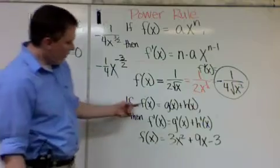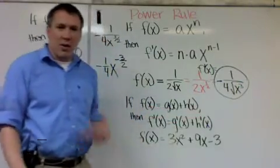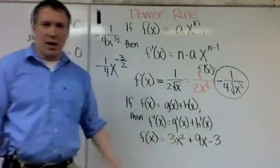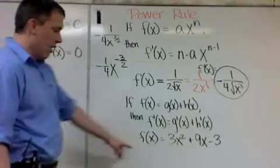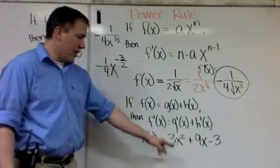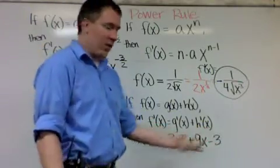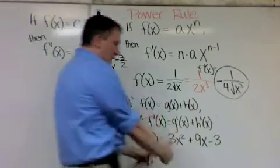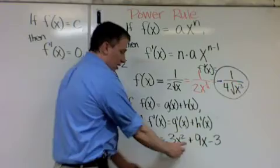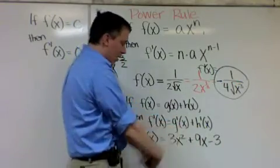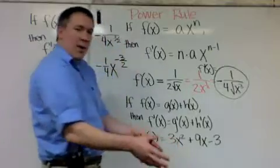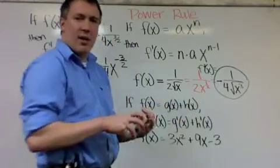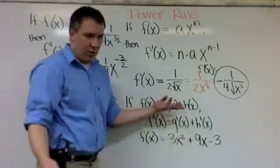And then the last one says, if I have a function that equals two functions added together, which sounds complicated, but it's really not, then the derivative of that function is just the derivative of those two functions added together. So we're going to use those to do this problem. Here's f of x. f of x equals 3x squared plus 9x minus 3. So let's use the power rule on the first one. And we get to do these each separately because it's like their own little function. 3x squared is its own because it's separated by a plus. Minus 3 is its own. There's three different sort of functions being added and subtracted. So I get to do them all individually.